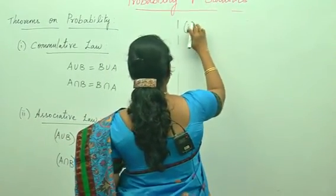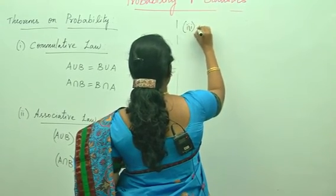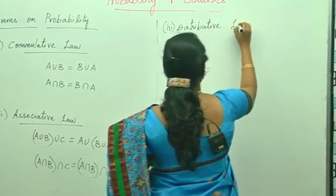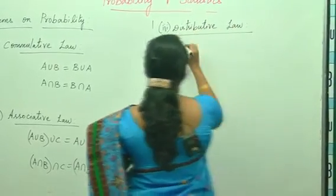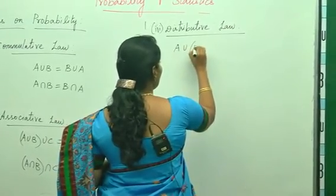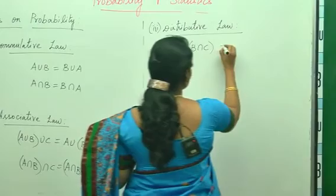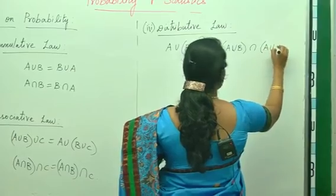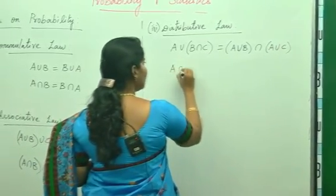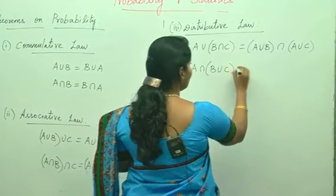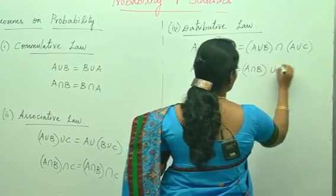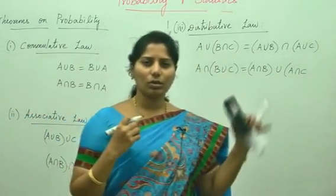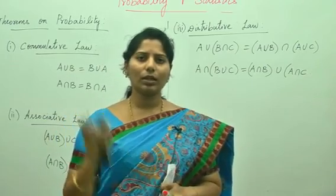Distributive law is very, very important. A union of B intersection C can be written as A union B, intersection A union C. Similarly, A intersection of B union C can be written as A intersection B, union A intersection C. These three laws are very, very important for proving the theorems on probability, which we are going to see now.